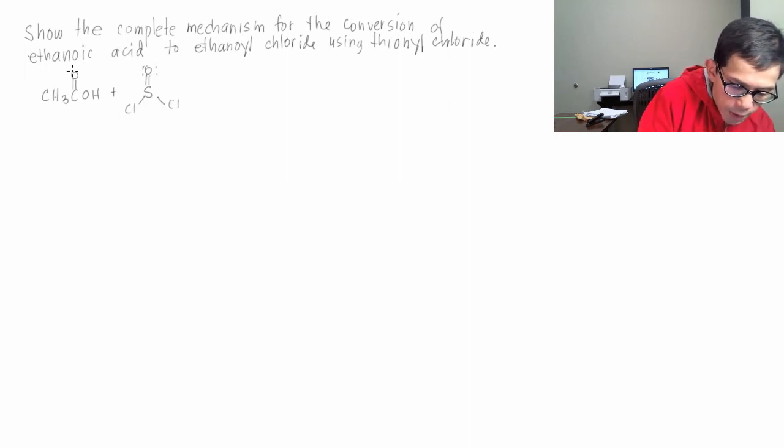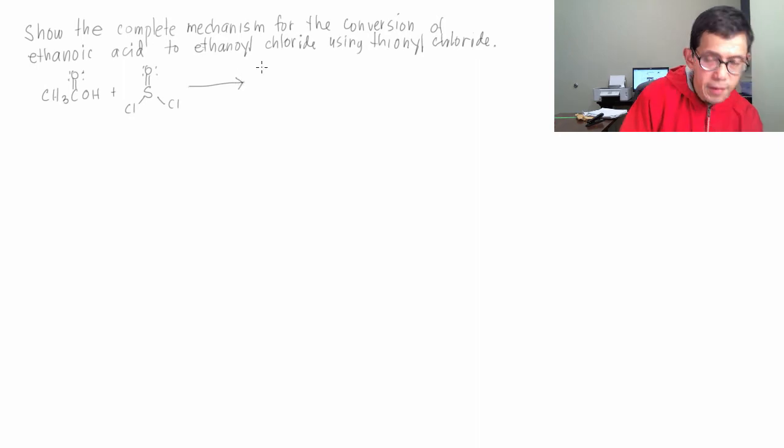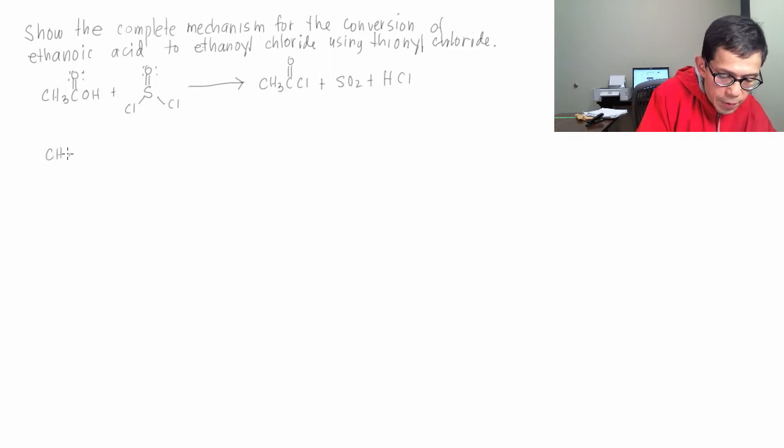You do have two lone pairs there on your oxygen. So what is going to happen is the OH goes, it will be replaced by Cl on your carboxylic acid, COCl. And the byproducts are SO2 plus HCl. So this is how it goes. CH3, C double bond O, OH. You do have two lone pairs on that oxygen bonded to hydrogen. And that will find the sulfur in SOCl2, Cl. So one of the lone pairs will attack the sulfur.